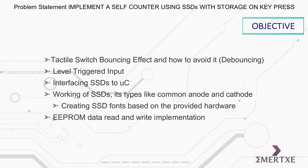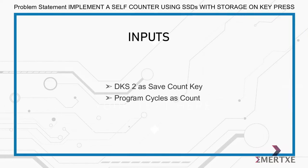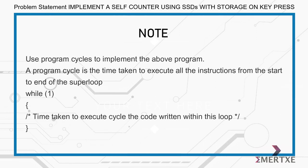Use a digital key switch as a save count key, and use program cycles as count inputs for the program. Note that you have to use program cycles to implement the above program. A program cycle is the time taken to execute all instructions from the start to the end of the super loop.